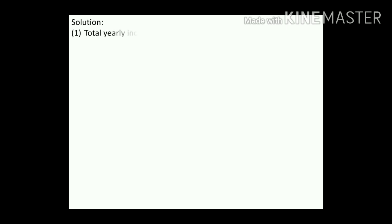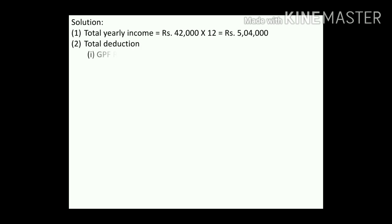Total yearly income = rupees 42,000 × 12 = rupees 5,04,000. The monthly income is 42,000, so the yearly income is 5,04,000. Now, total deductions: